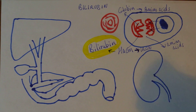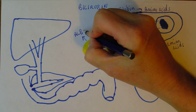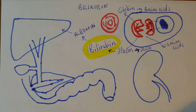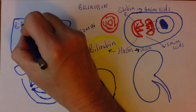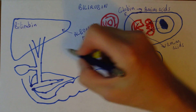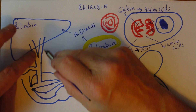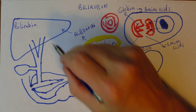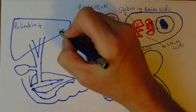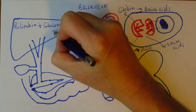Bilirubin is not water soluble, so to be transported in the blood it must combine with albumin, and that will transport it to the liver. Now the liver can't go on accumulating bilirubin — it's going to need to get rid of it. To get rid of it, it needs to make it water soluble so it can be excreted in the bile. Since it's not water soluble, the liver combines it with glucuronic acid.